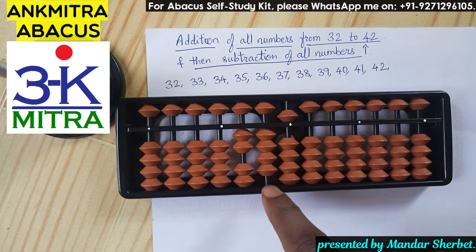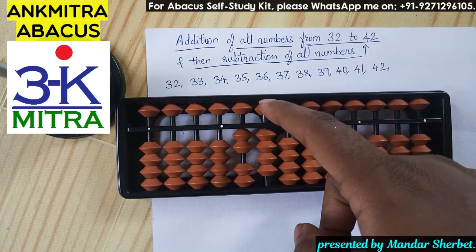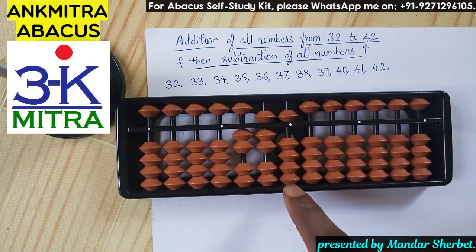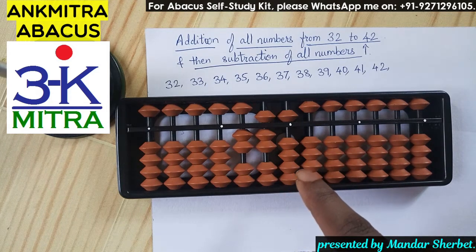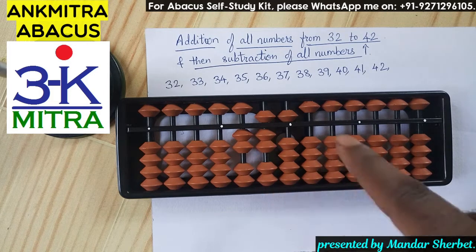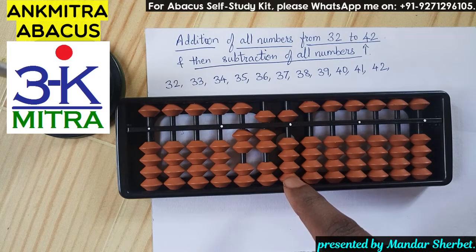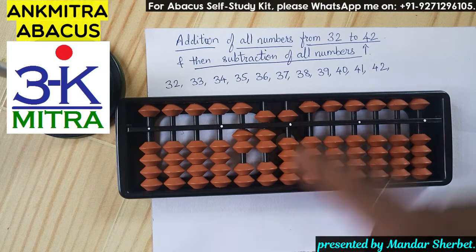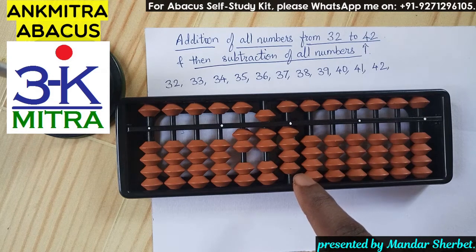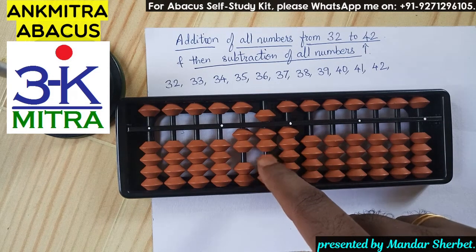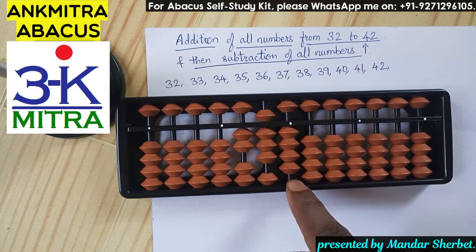Next number is 39. To add 3 on the tens place, I use the small friend formula — plus 5 minus 2. For the addition of 9 on the units place, we use the combination formula. The big friend of 9 is 1, so we subtract 1 and add 10 on the next left rod. But to subtract 1 we don't have one bead available, so we use the small friend formula of 1 — plus 4 minus 5 — and then add 10 on the next rod. 39 is now done.